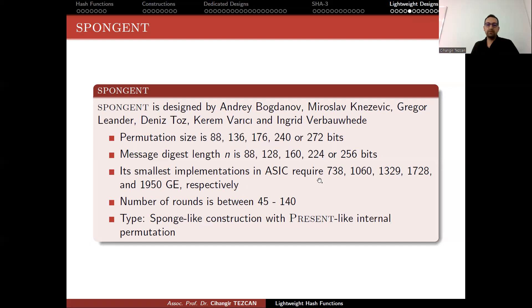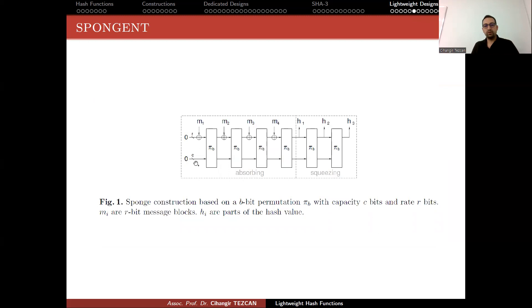The number of rounds depends on your choice of parameters and is between 45 and 140. Spongent is also a sponge-like construction, but instead of an AES-like permutation it uses a PRESENT-like permutation. You have your R rate and capacity, you feed the message blocks, then provide hashing output.